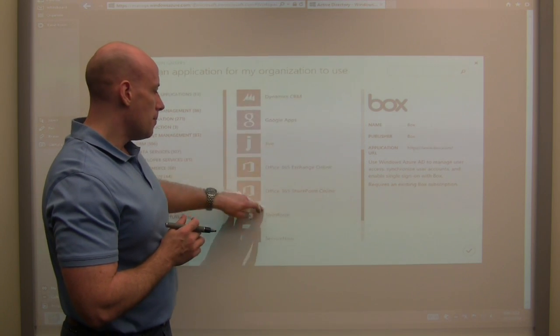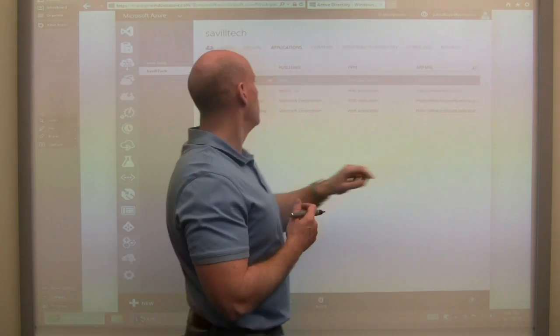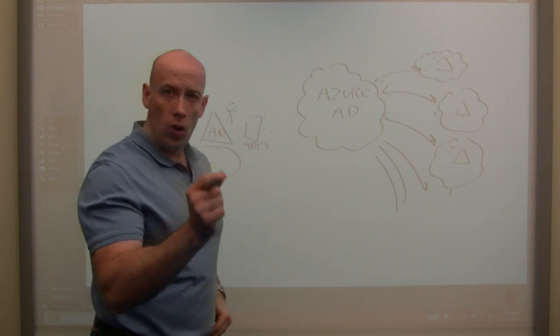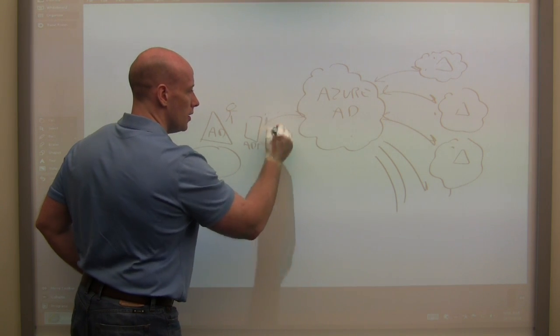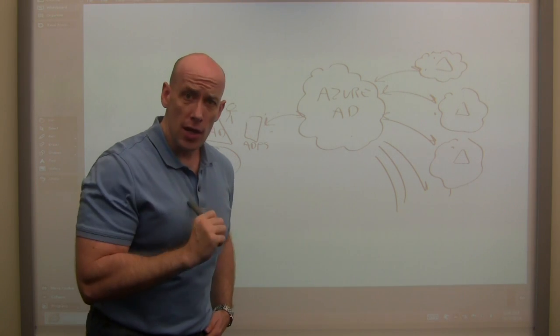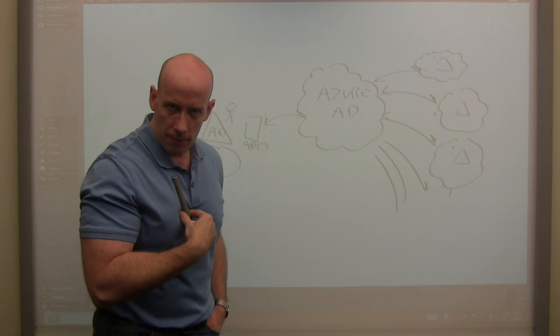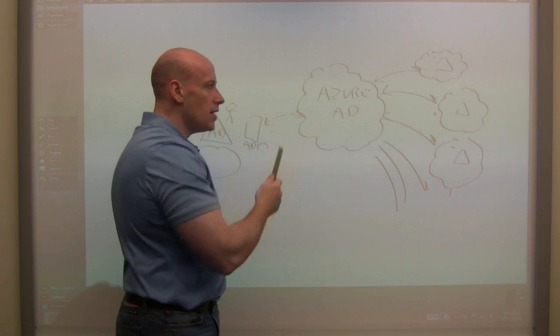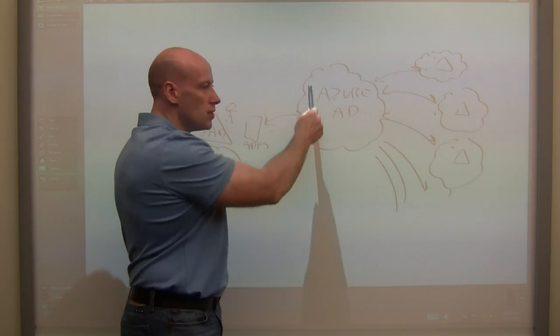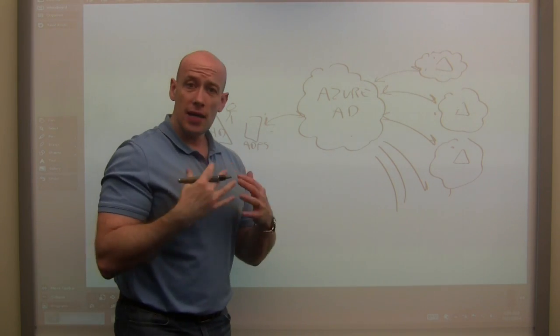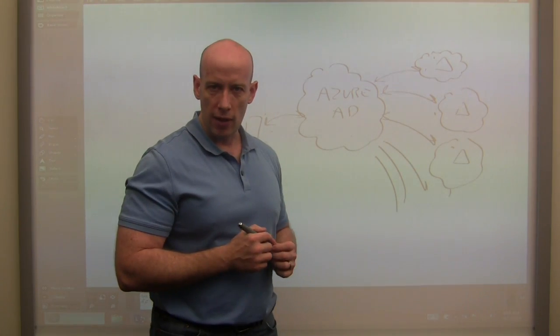And so what this now means is that I, as a company, I don't have to do that anymore. All I do is I federate once with Azure AD. So my users now essentially have objects in Azure AD that represent them. They authenticate to that. There's an immutable ID that says, hey, yes, you're this person. You're allowed to use this Azure AD credential.